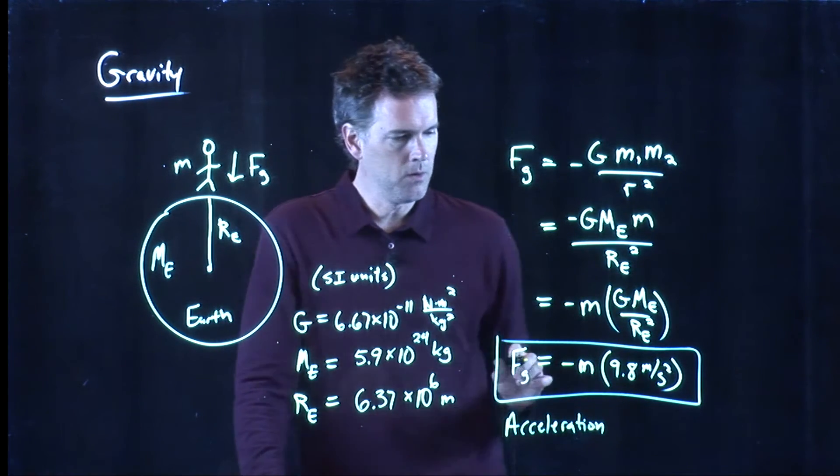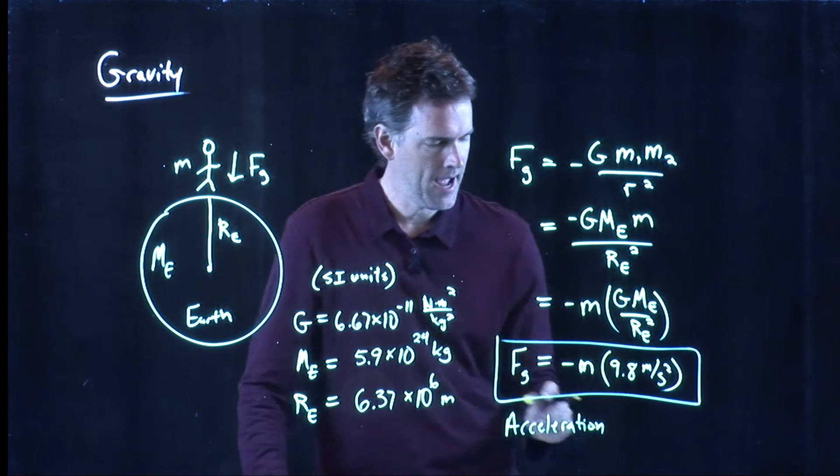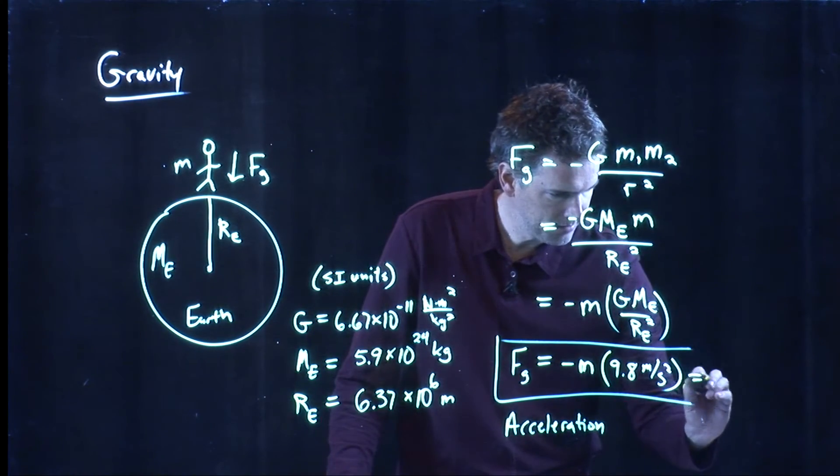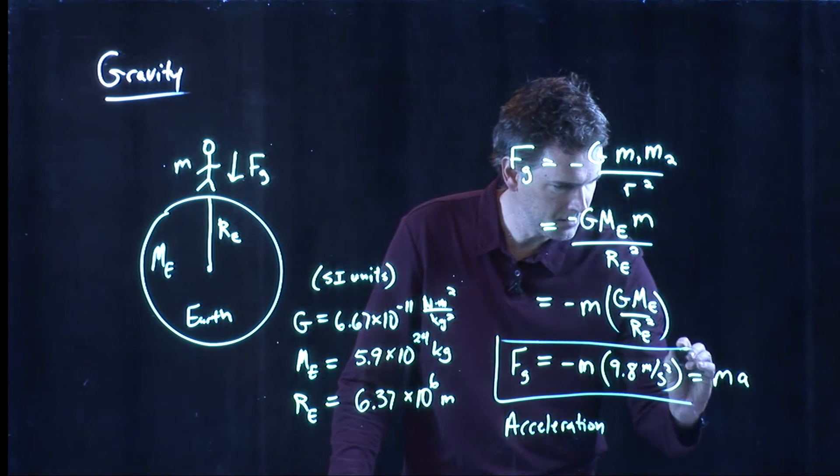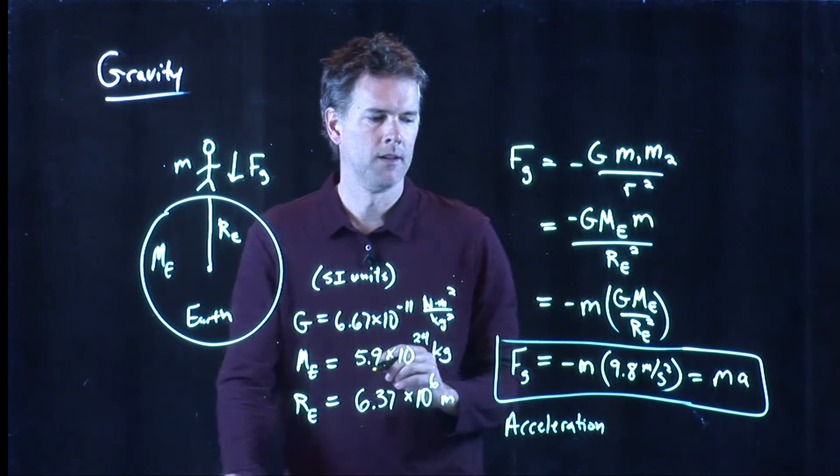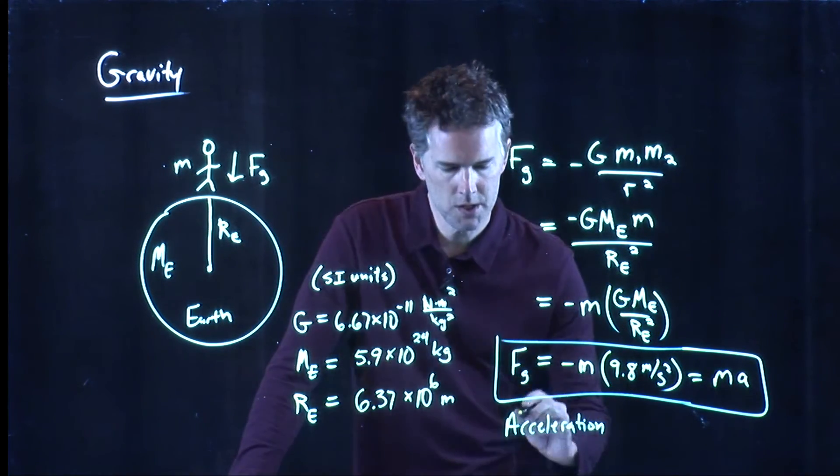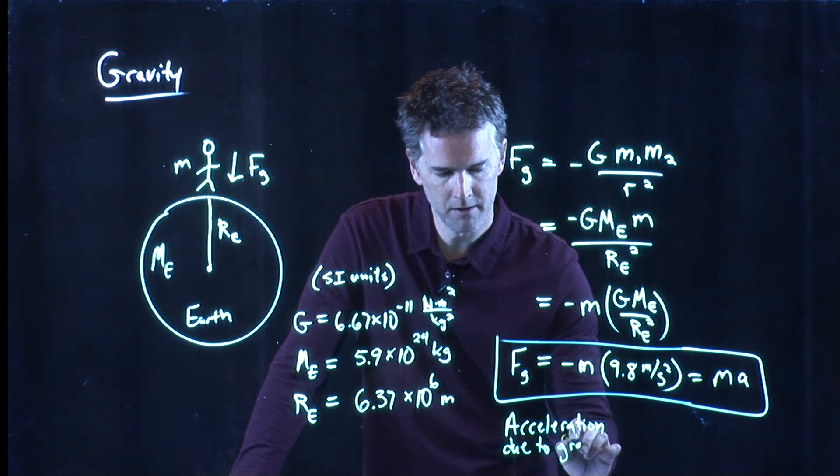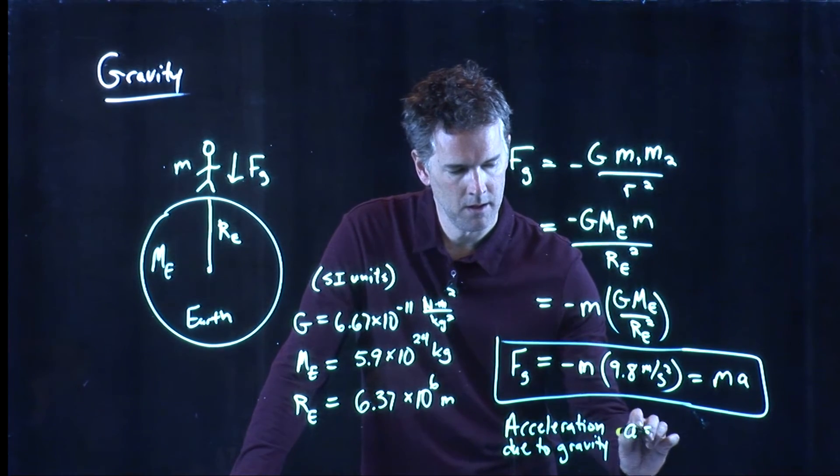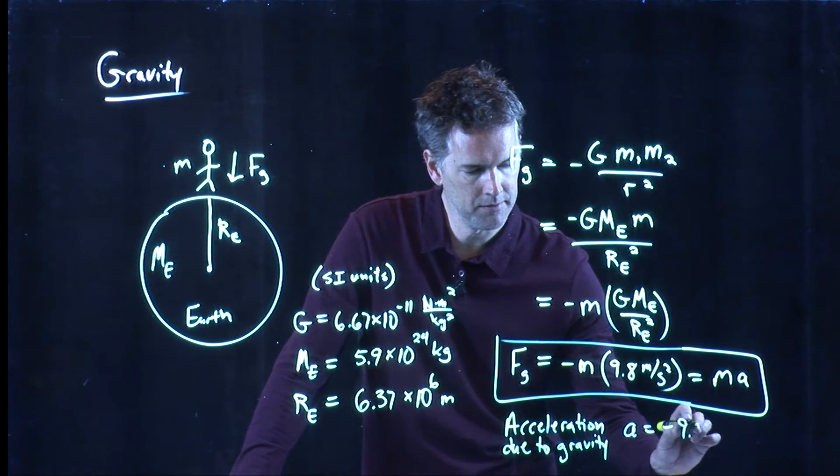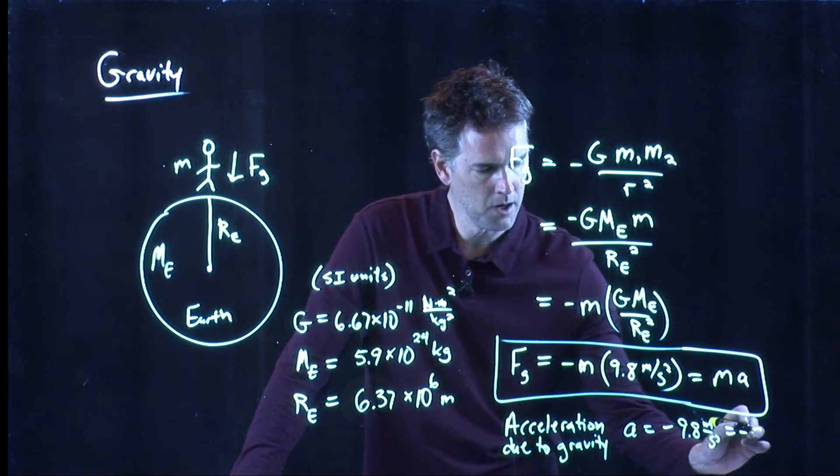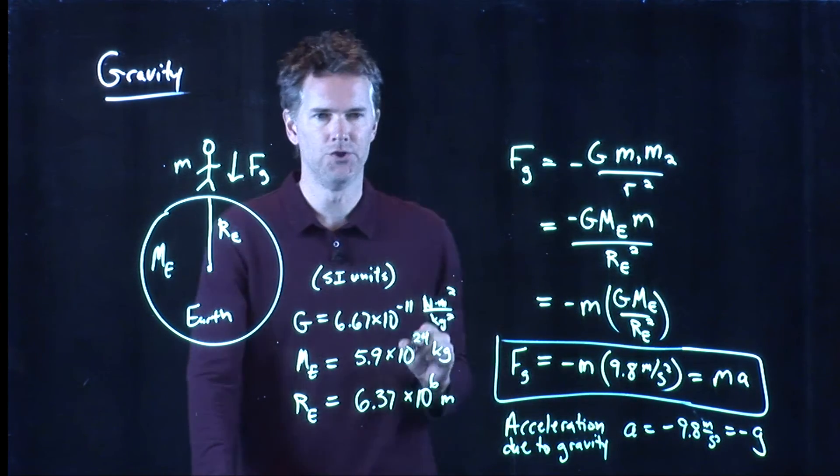What we know is that force has to be equal to mass times acceleration. And so the acceleration due to gravity at the Earth's surface is negative 9.8 meters per second squared, which is what we call negative g.